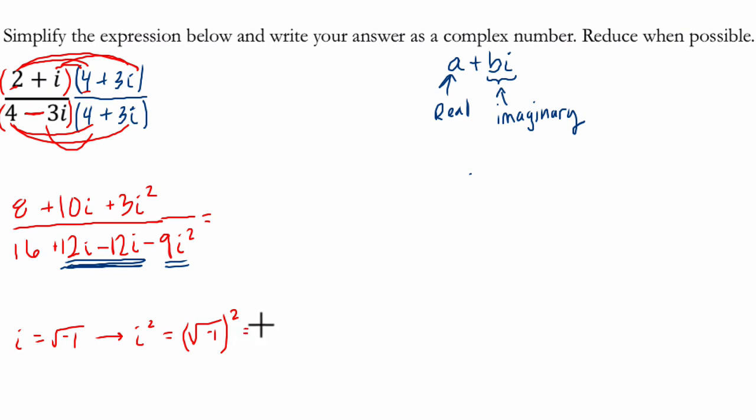that equals negative 1. So the square root squared. And another way to think about that is that the square root is the half power. So it's negative 1 to the half power. So you have negative 1 to the 1 half power. And that is being squared. So,